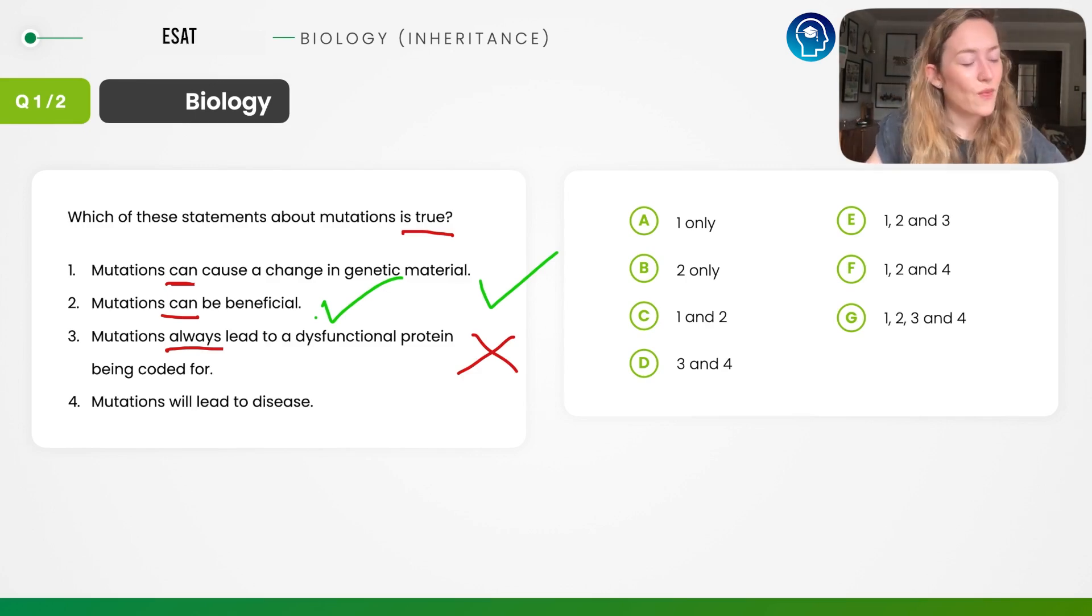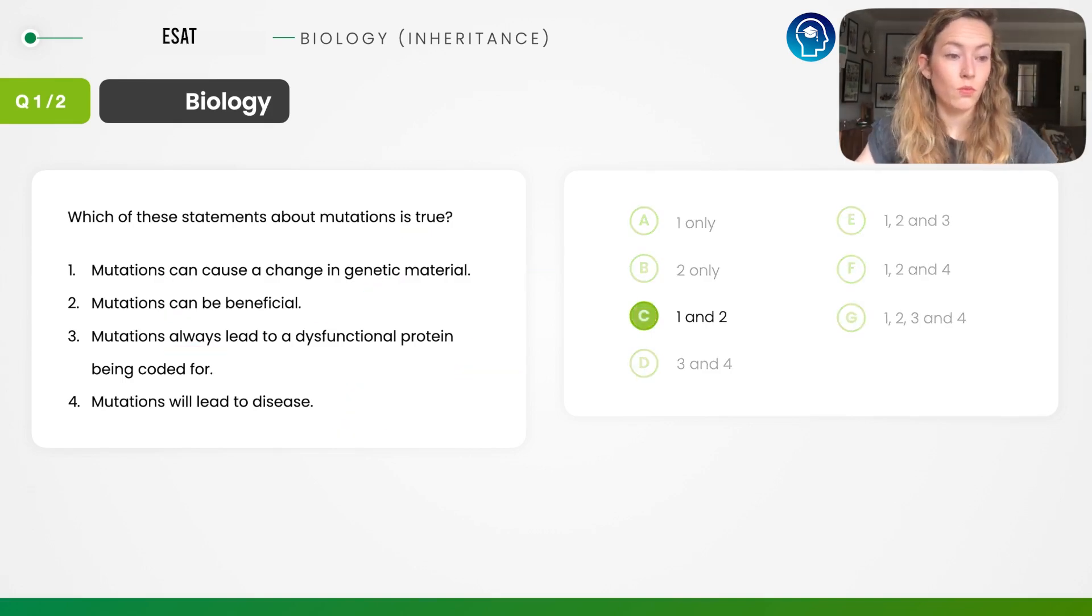Be really careful when you see words such as always. If we look at statement four, mutations will lead to disease. Again, quite a definitive term—will lead to disease. So we need to be really careful of that. Actually, some mutations can cause dysfunctional proteins that don't lead to a disease as such, or as an example we said before, you might get a silent mutation which does not get seen in the phenotype at all. It's silent. So again, unlike statements two and three which use terms such as can, both statements three and four have these strong terms always and will. That statement is also incorrect. So statements one and two are correct. So we select option C.